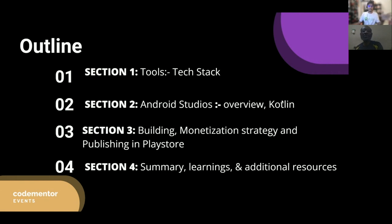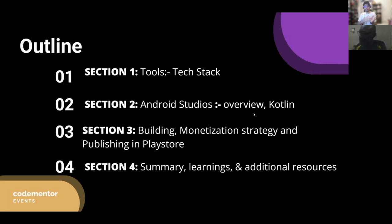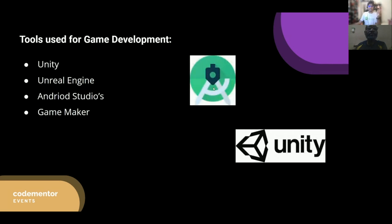We will be learning about the tools used for app development and game development. The process is almost the same, but the main difference is in the technology used. We should have an idea, choose a technology, publish the game, and then monetize it. The tools needed for game development are Unity, Unreal Engine, Android Studio, and Game Maker — these are the four tools mostly used. After the COVID pandemic, the game development field has been growing at 20 percent per year and has a market value of 140 billion dollars.